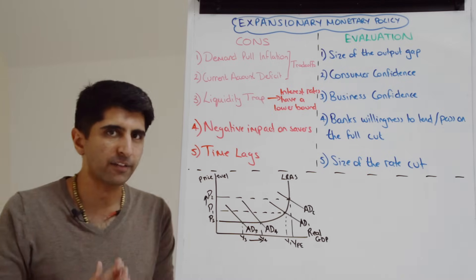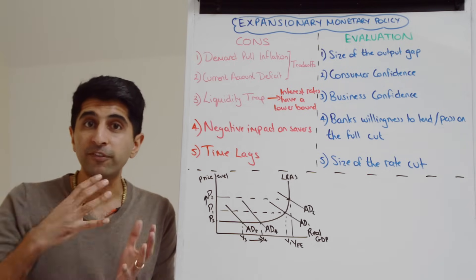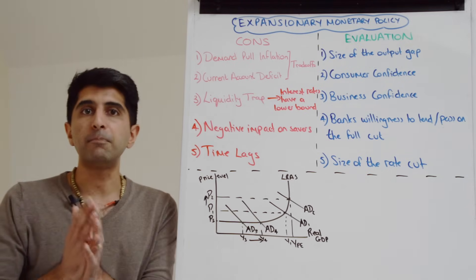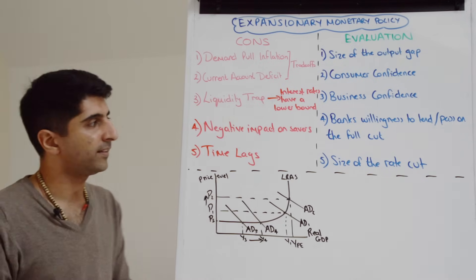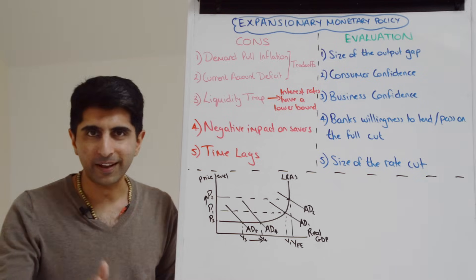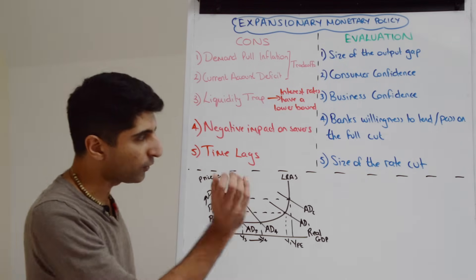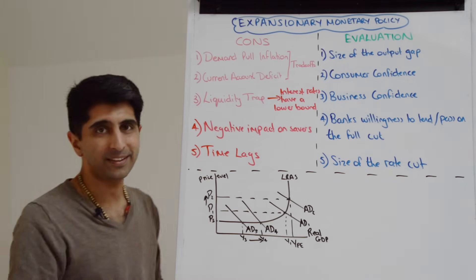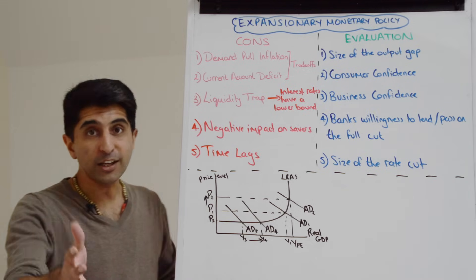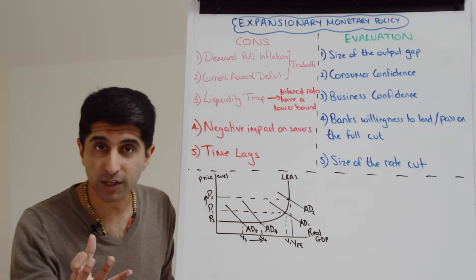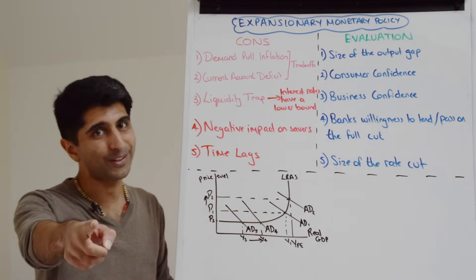So there's some key evaluation points. And if for whatever reason an interest rate cut isn't that effective, then maybe the central bank will be forced to use alternative measures like boost to the money supply, quantitative easing, and I've got videos on my channel that cover that which you can watch as well. So thank you so much for watching this. Hopefully that all made sense and you understand it. Stay tuned for the next video when we look at contractionary monetary policy in detail. I'll see you then.